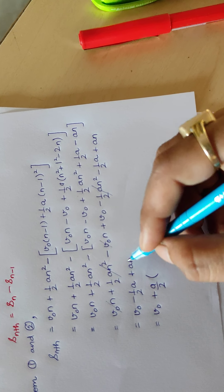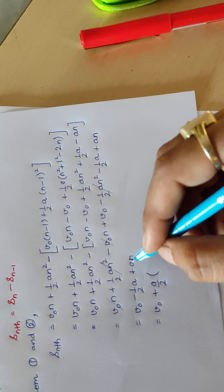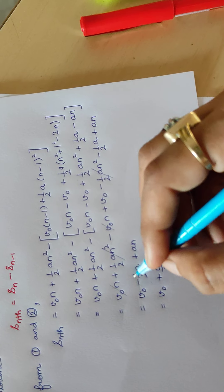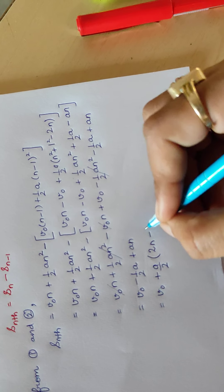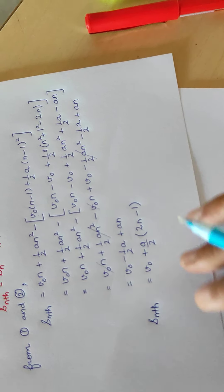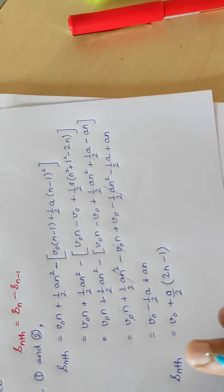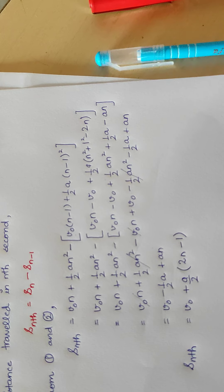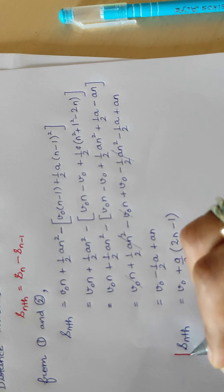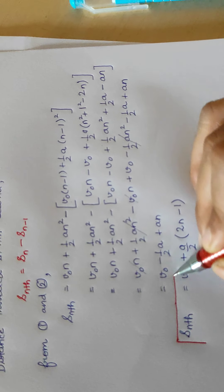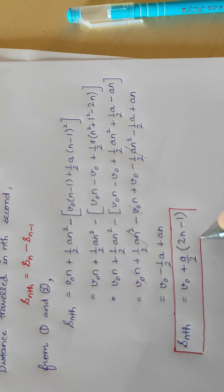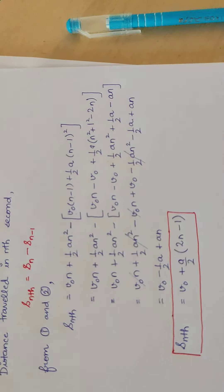Taking out A by 2 as a common factor, what remains inside the bracket is 2n minus 1. So the expression for the distance travelled by the body in the nth second is: S_nth equals v₀ plus A by 2 times (2n minus 1).